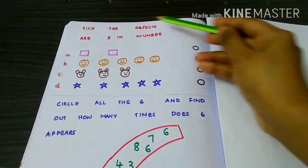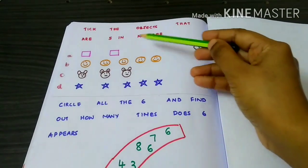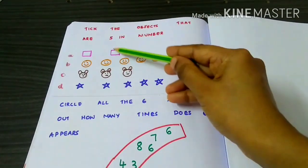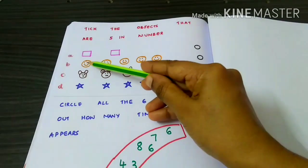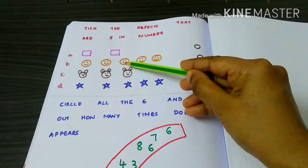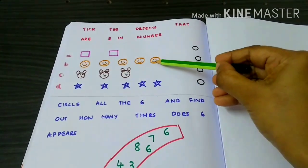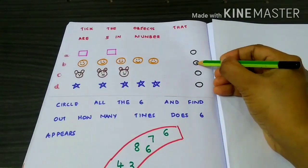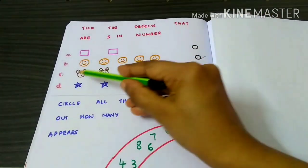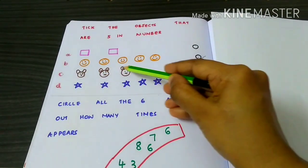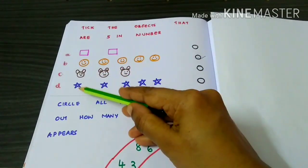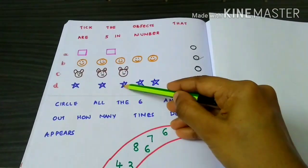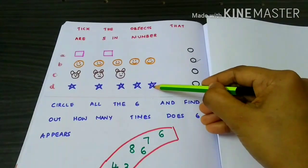Pick the objects that are five in number. 1, 2, 1, 2, 1, 2, 3, 4, 5, 1, 2, 3, 1, 2, 3, 4, 5.